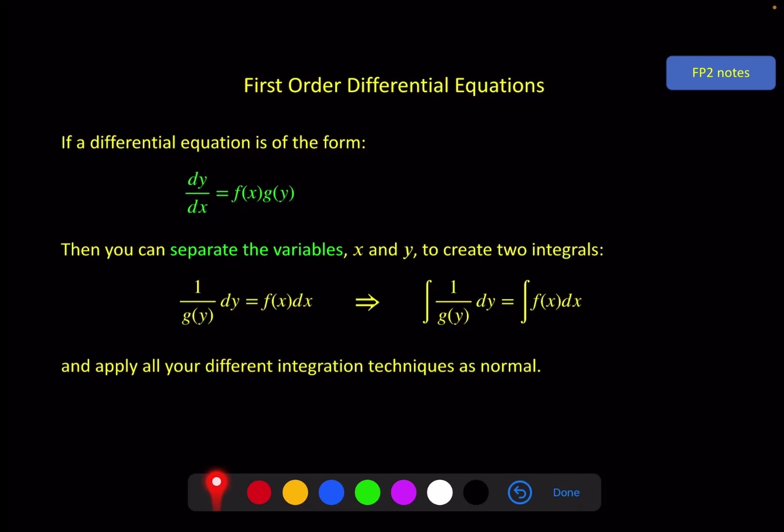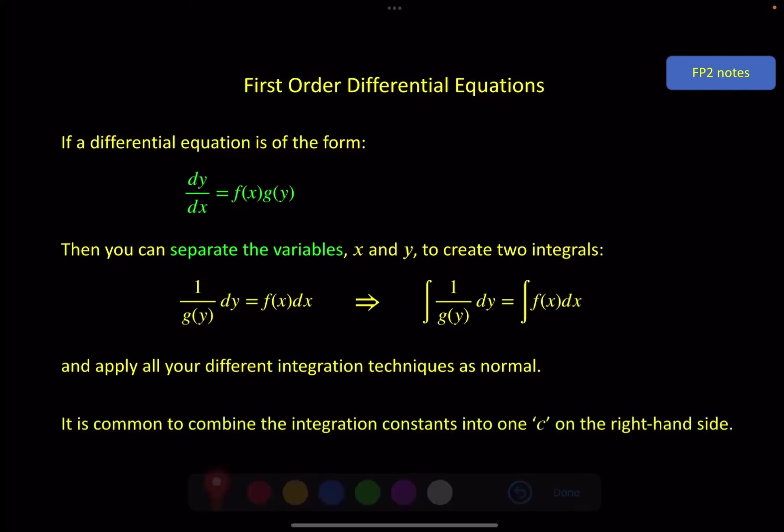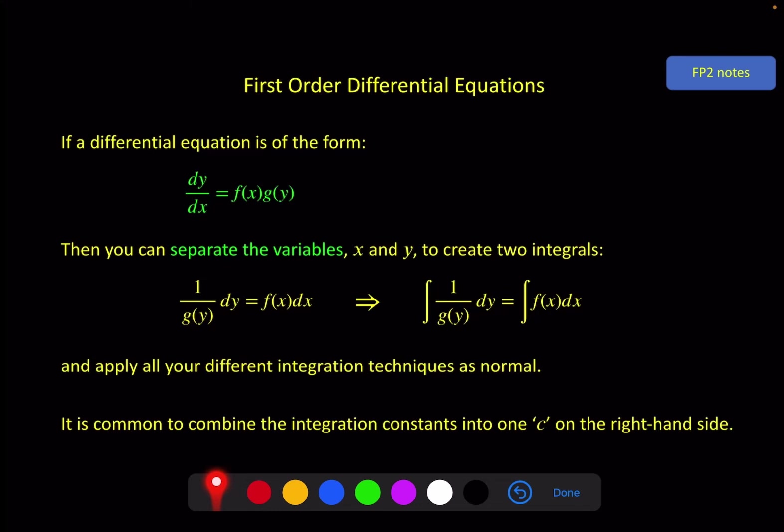One quick thing to note is that when you're doing two integrations, you don't normally put in two constants of integration. You would just put them on one side and call them c altogether. So maybe over here you'd have a plus a, over here a plus b. You bring a over here, combine them, and call it c. You wouldn't write all of that, you would just put the c on the right-hand side. And remember to put that constant in after you've done your integration, but before you start rearranging anything, if you need to rearrange it into a certain form.